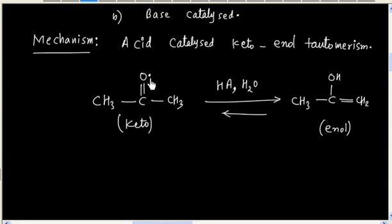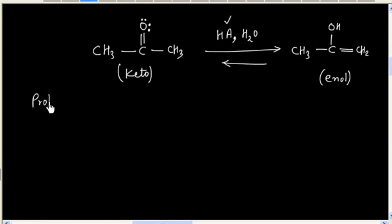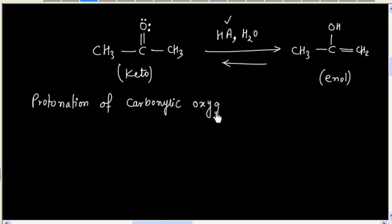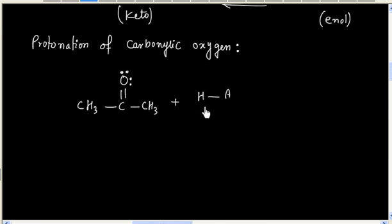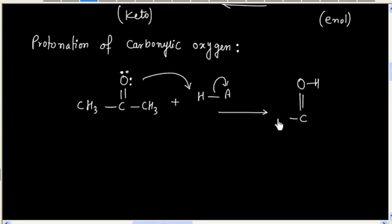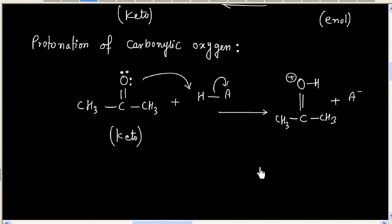In the first step, the carbonyl oxygen gets protonated by the acid HA. So the first step is protonation of the carbonyl oxygen. We start with the keto form and acid HA, and we obtain the protonated keto form.